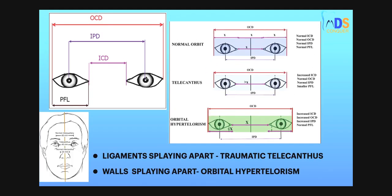OCD is the outer canthal distance — normal is 100 mm. Interpupillary distance normal is 60 mm, and intercanthal distance normal is 30 mm.